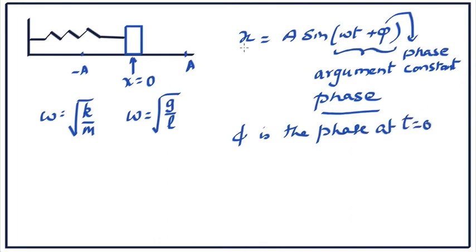So at t equal to 0, which part of the oscillation are you at? For example, if phi is pi by 2, that means at t equal to 0 the phase is pi by 2. Sine pi by 2 is 1, so x is equal to A — we start our clock when it's passing through the maximum. In that case, the oscillation is described by A sine omega t plus pi by 2. On the other hand, if phi equals 3 pi by 2, then sine 3 pi by 2 is minus 1, so x equals minus A — we are starting the clock when it's at the minimum. The description is x equal to A sine omega t plus 3 pi by 2. So the phase constant is calculated from the initial conditions.